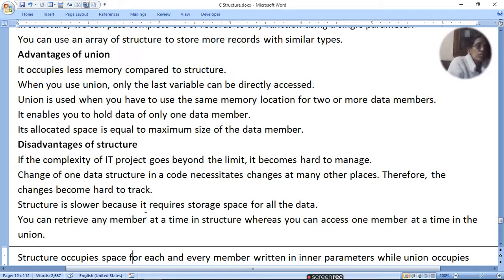Disadvantage of structure: if the complexity of IT project goes beyond the unit, it becomes hard to manage. Change of one data structure in a code necessitates change at many other places. Therefore, the changes become hard to track. Structure is slower because it requires storage space for all data. You can retrieve any member at a time in structure, whereas you can access one member at a time in union.